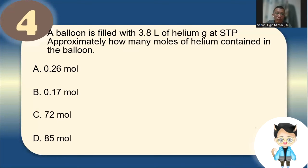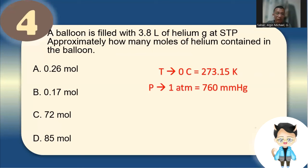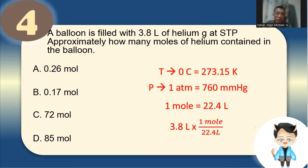Number 3: A balloon is filled with 3.8 liters of helium at STP. Approximately how many moles of helium are in the balloon? At STP, 0°C equals 273.15 K, pressure is 1 atm (760 mmHg), and 1 mole equals 22.4 liters. So: 3.8 ÷ 22.4 = 0.17 moles. The answer is letter B.